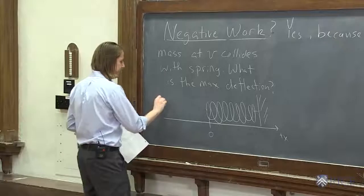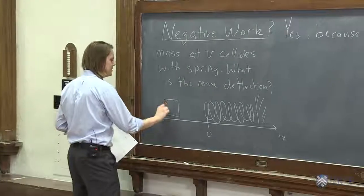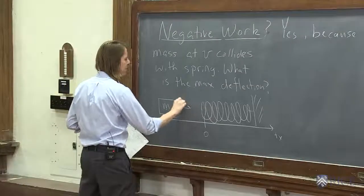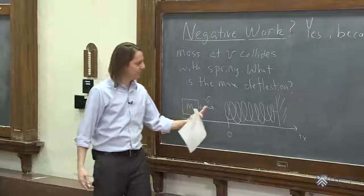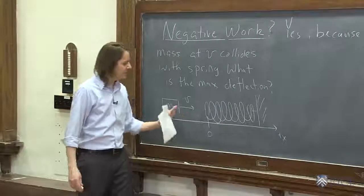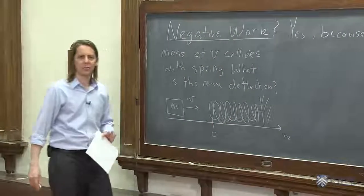The mass is going to come flying in like this at velocity V. So you can imagine what's going to happen is the spring will push and it will bring the mass to a stop. And that's the question: how far does it go in to bring the mass to a stop?